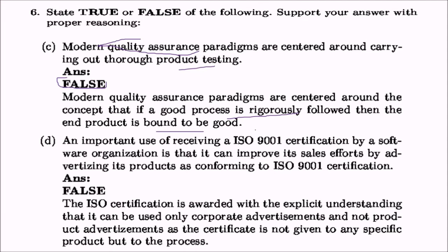An important use of receiving ISO 9001 certification is that a software organization can improve its sales effort by advertising its product as conforming to ISO 9001 certification. In practice this seems true, but in theory the answer is false. The ISO certification is awarded with the explicit understanding that it can be used only for corporate advertisement and not product advertisement. You will never see a product claiming it is ISO certified — ISO certifies that the processes used to make that product are ISO certified and have been followed as per ISO guidelines.